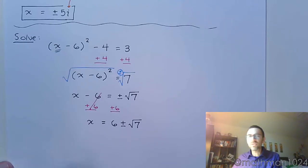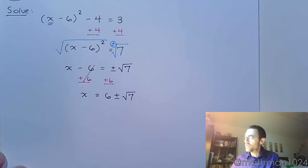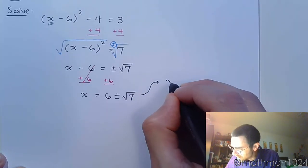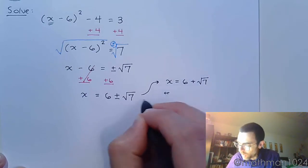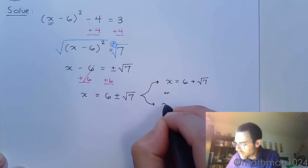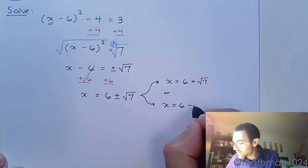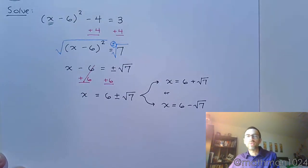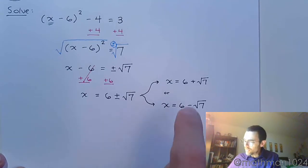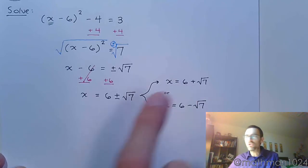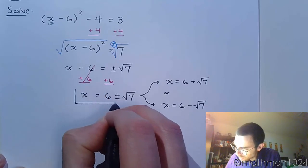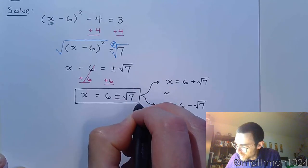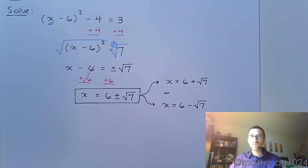So we get x = 6 ± √7. You could split this up and say x = 6 + √7 or x = 6 − √7, but there's no real benefit because you can't combine these terms — there's no more work to be done. You can separate them like that, or keep the answers condensed as 6 ± √7. It's the same thing.